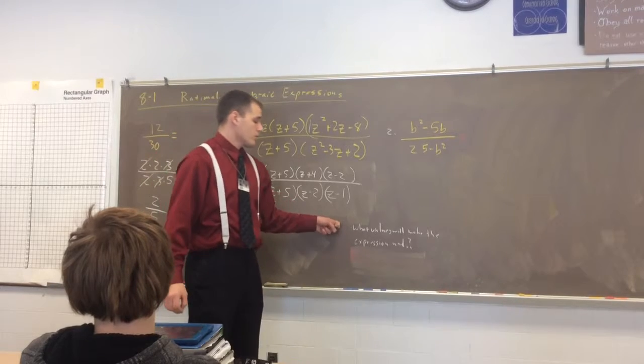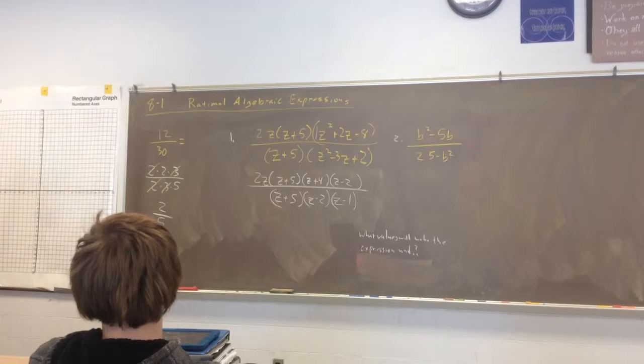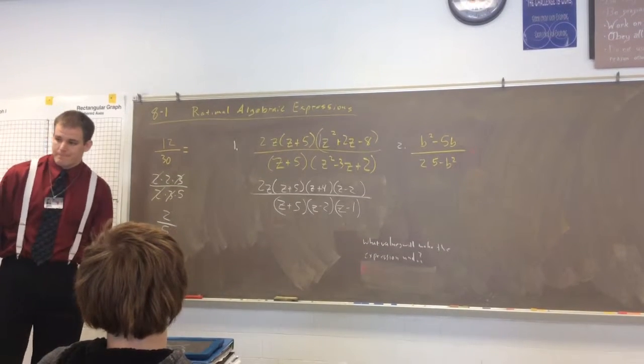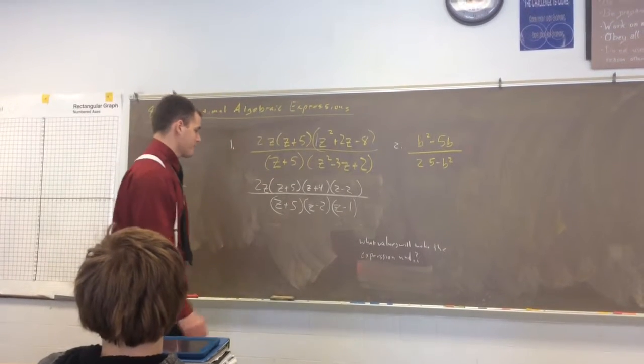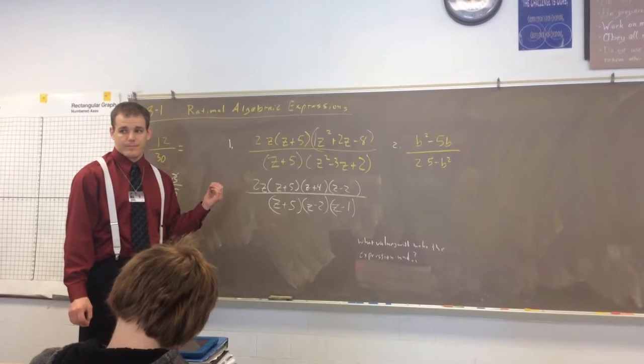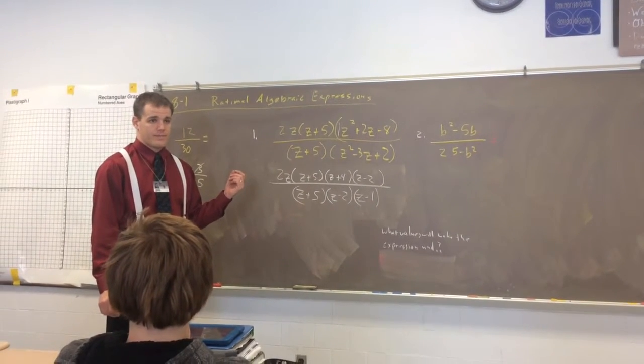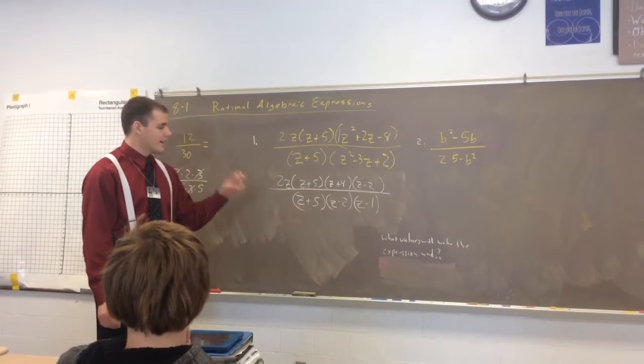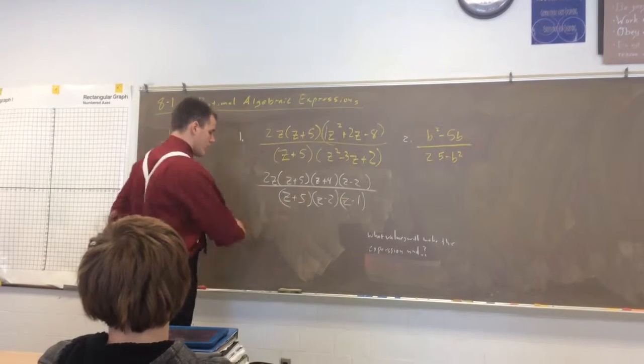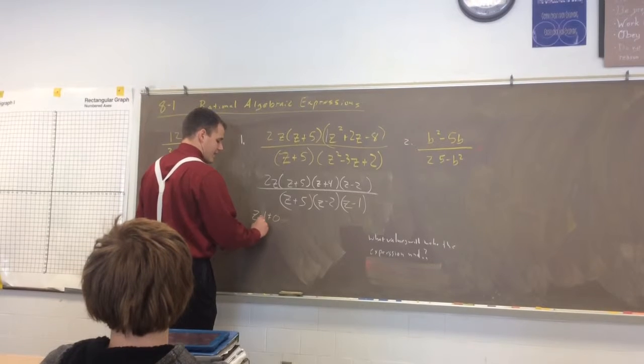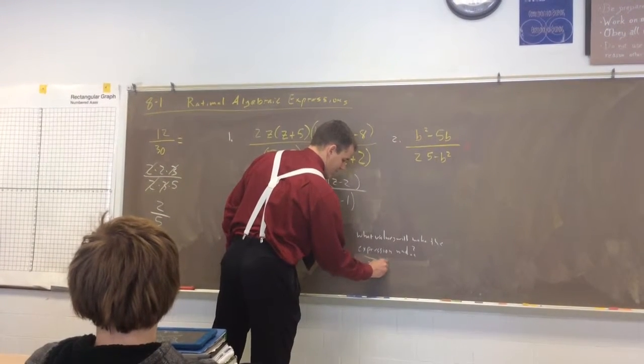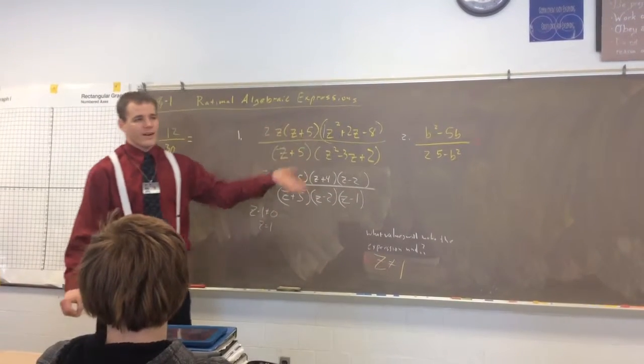What values will make this expression undefined? Undefined is when we divide by 0. What happens if you divide by 0? Dogs die. Puppies die. Can't divide by 0, because then puppies die.